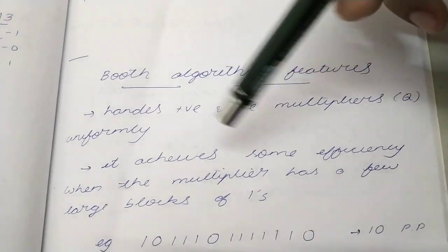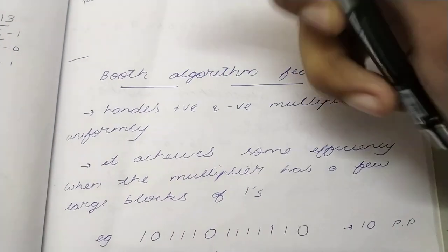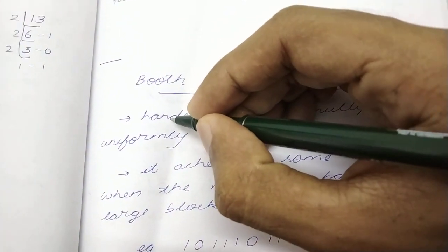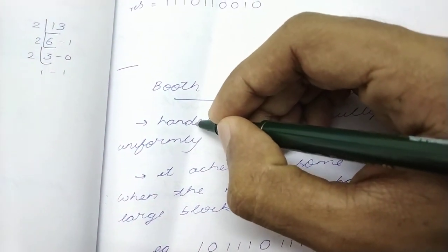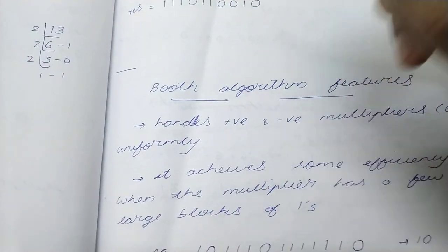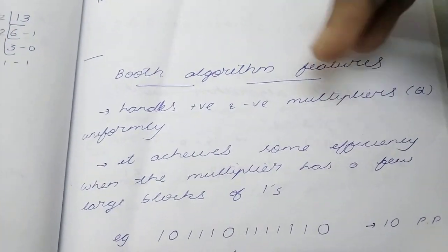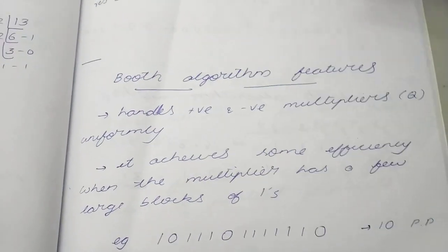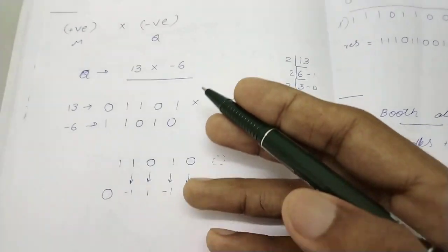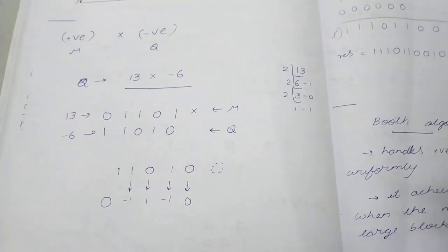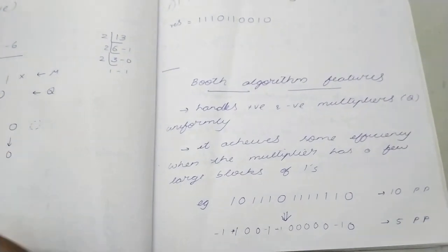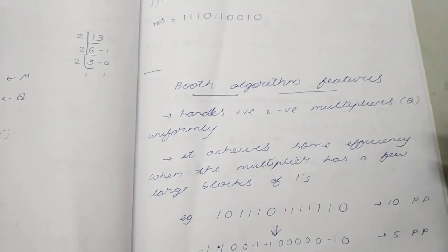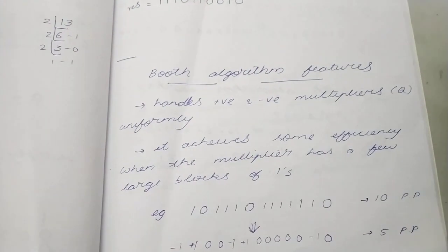The features of Booth algorithm include that it handles positive and negative multipliers uniformly. We've seen this now - negative numbers can also be multiplied using Booth algorithm. Before we could not do that. Here we can do positive and negative multipliers, so that's the first point.